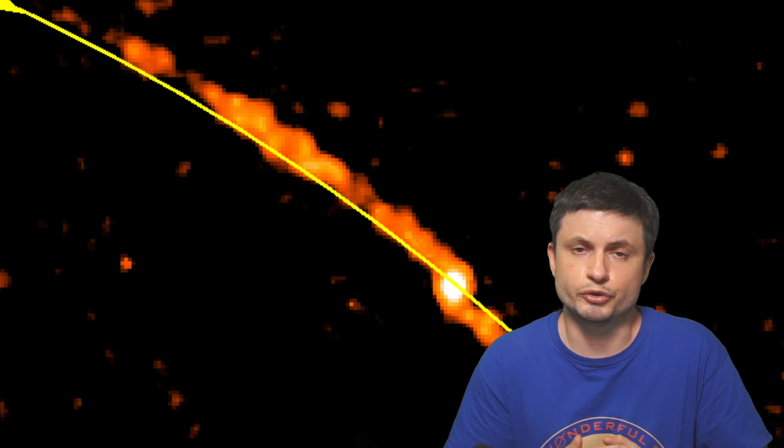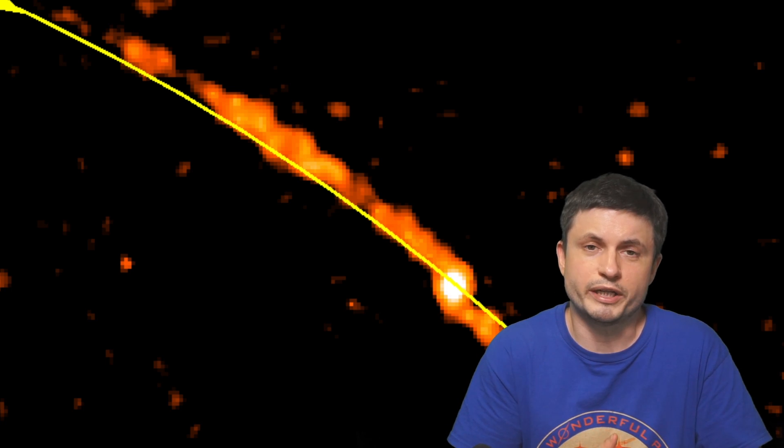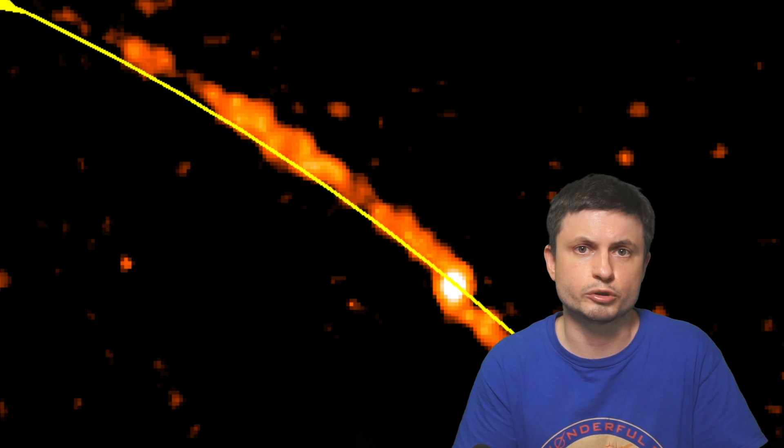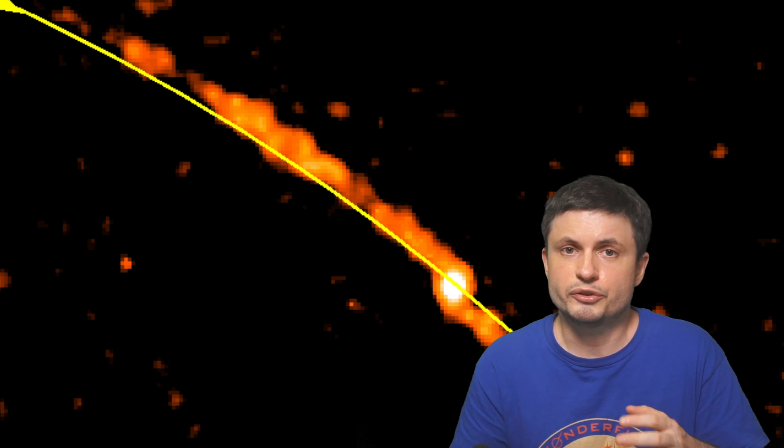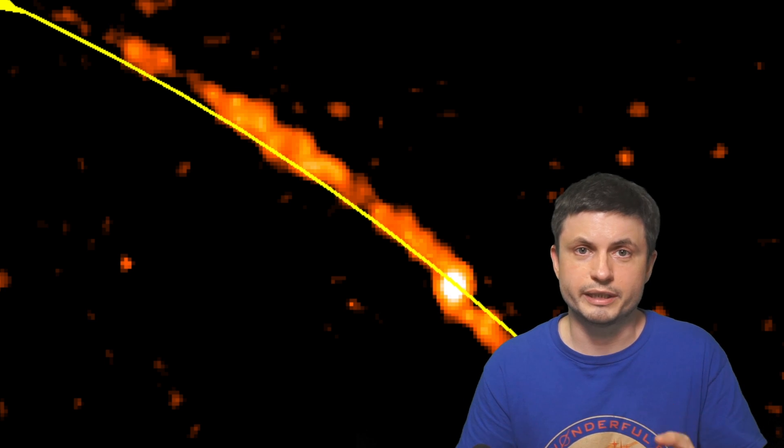But in this study, the scientists do use a mathematical analysis and sort of find a way to maybe estimate the number of black holes by just looking at how many stars are being ejected from the cluster compared to the ones that stay in.